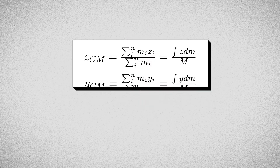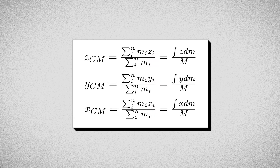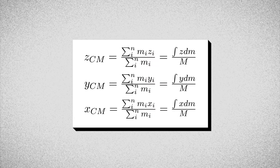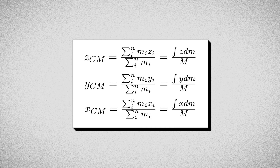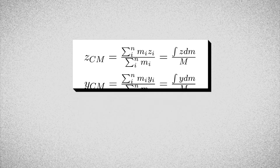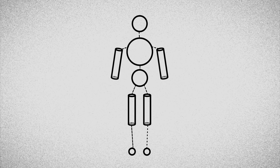We can also use mathematical equations to calculate the center of mass location by making some assumptions and simplifications of body segment shapes. For instance, by pretending the forearm is a perfect cylinder or the head is a perfect sphere.